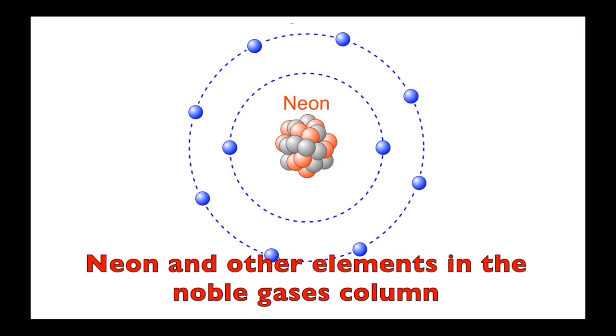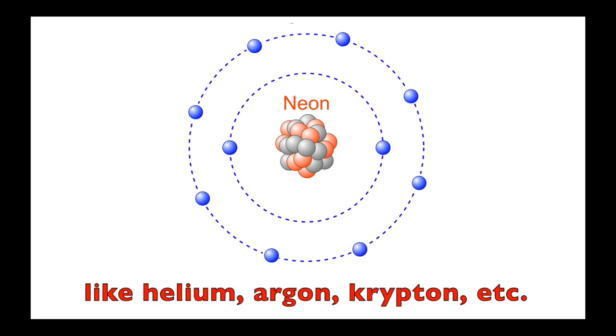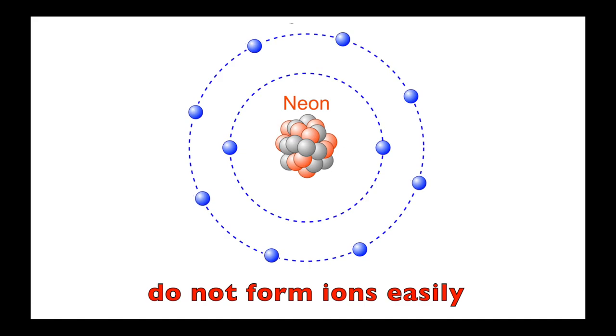Neon and other elements in the noble gases column, like helium and argon and krypton, do not form ions easily.